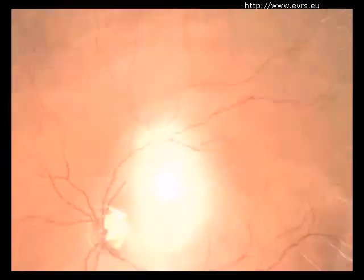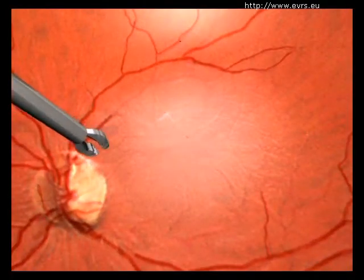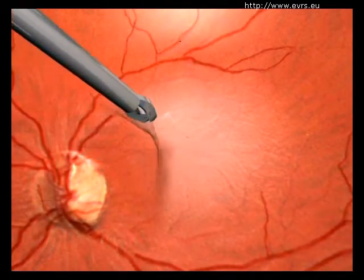He will then remove the posterior hyaloid, the envelope of the vitreous body, often stuck to the retina.